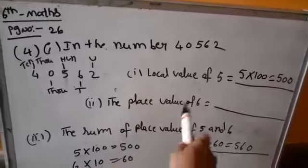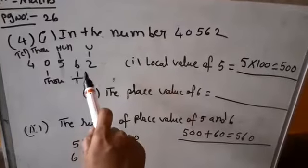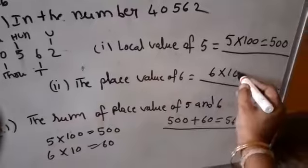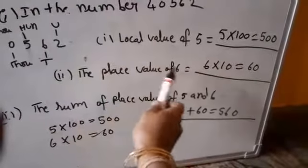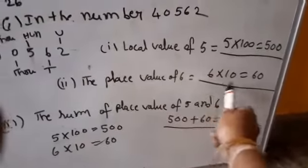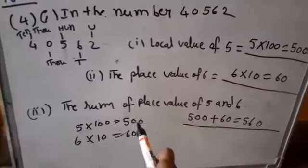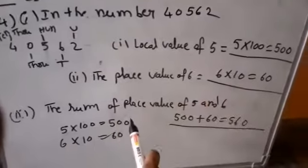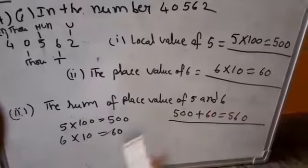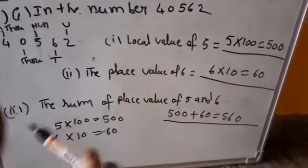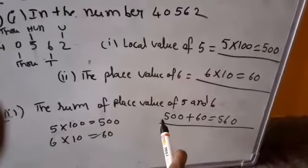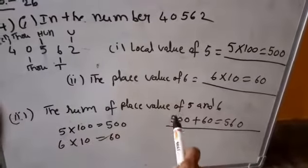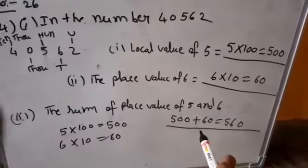Second question: the place value of 6. Here, 6 is in the tens place. So 6 into 10 equals 60. The place value of 6 is 60. Third question: the sum of place values of 5 and 6. Place value of 5 is 500 and place value of 6 is 60. Sum means addition: 500 plus 60 equals 560. So the answer is 560.